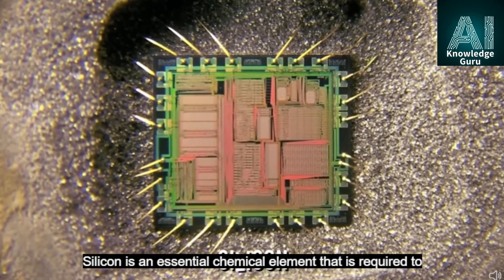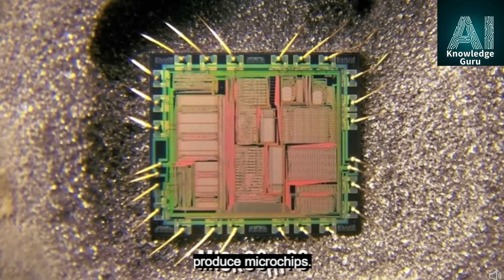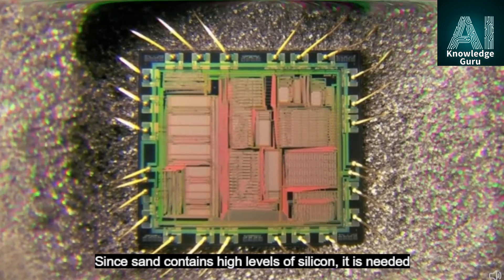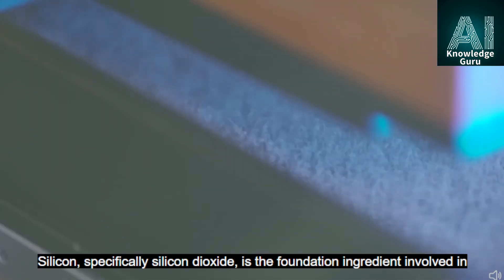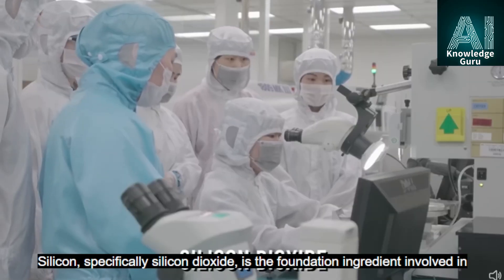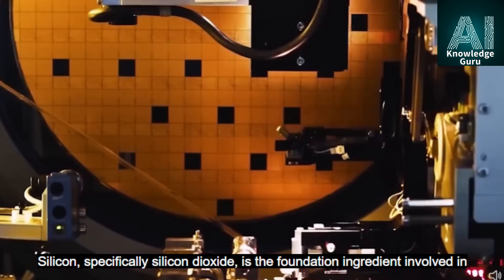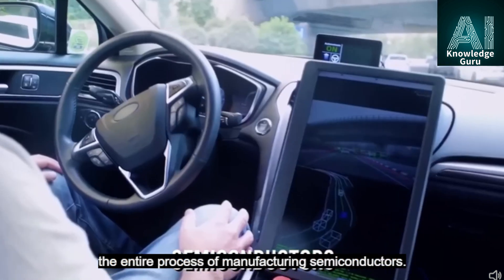Silicon is an essential chemical element that is required to produce microchips. Since sand contains high levels of silicon, it is needed for making the microprocessors. Silicon, specifically silicon dioxide, is the foundation ingredient involved in the entire process of manufacturing semiconductors.